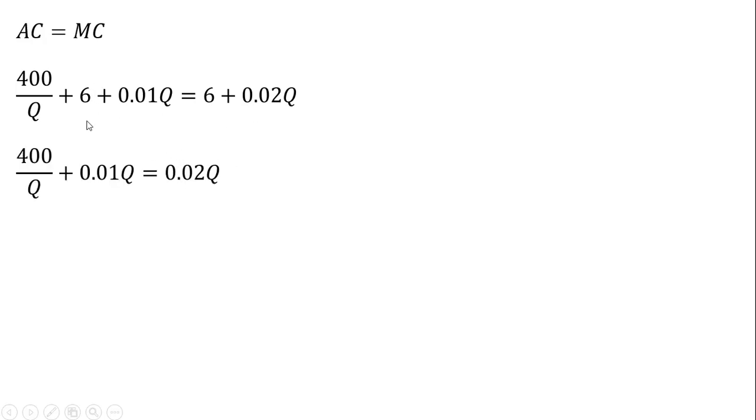So a 6 on the left-hand side and a 6 on the right-hand side of the equation cancels, and now we're left with this. Subtracting this 0.01q from both sides and simplifying the right-hand side. Next thing I'm going to do, I'm going to multiply both sides through by q, and that brings us to this step.